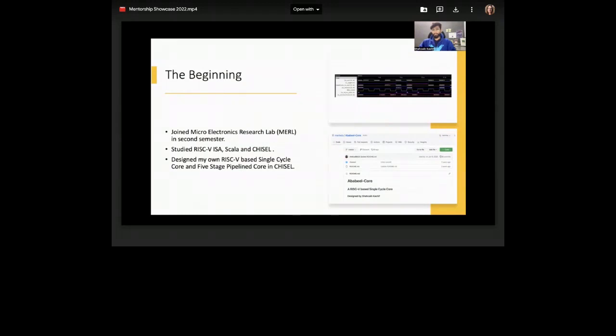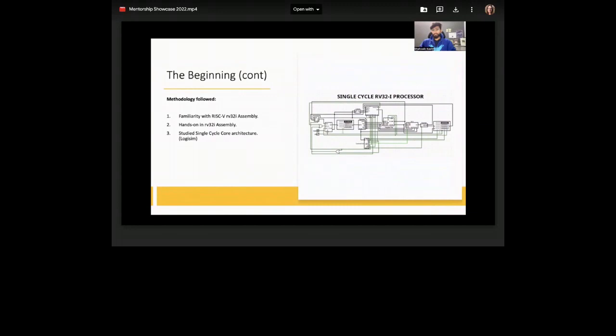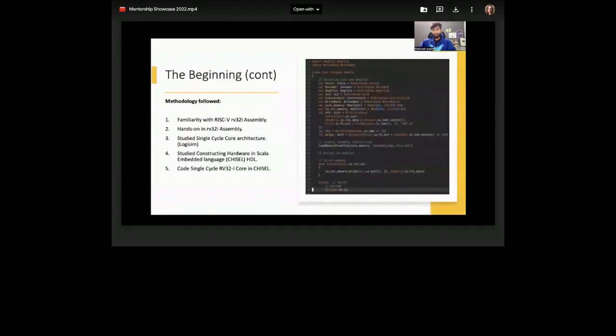It all started when I first joined Microelectronics Research Lab in the second semester of my studies, where I first got introduced to the RISC-V instruction set architecture, as well as Chisel, which is a high-level hardware construction language embedded in Scala. I designed my own RISC-V single-cycle core, followed by extending it to a five-stage pipeline core implementation in Chisel. The methodology which we followed was first getting familiarity with the RISC-V RV32I assembly.